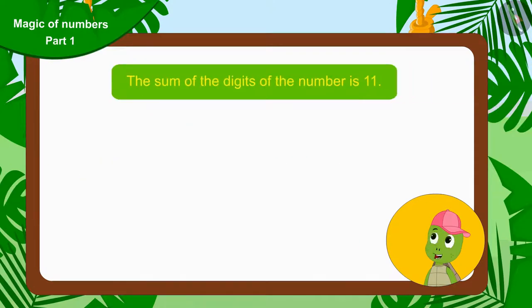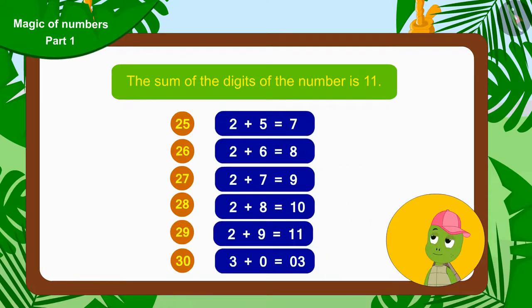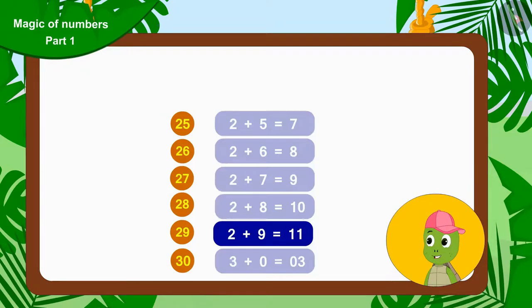According to the third hint, the sum of the digits of this number is 11. Let me first write the numbers between 25 and 30. Then, I only have to find that number whose sum of the digits is 11. By saying that, Tufan started to write the numbers 26, 27, 28 and 29. Well, out of these, only 29 is the number whose sum is 11. This means that the number you thought about is 29.